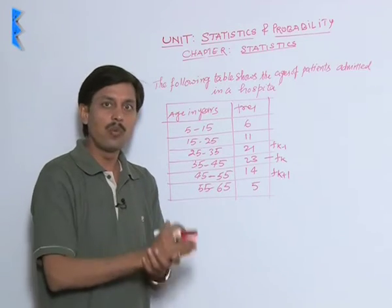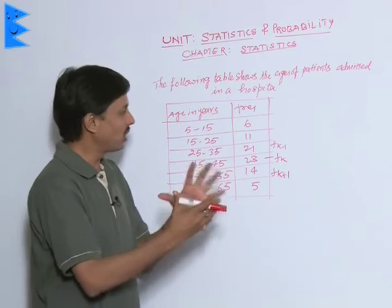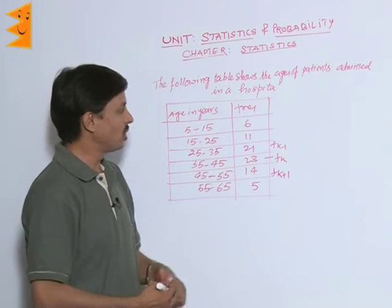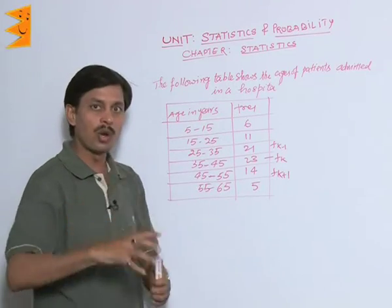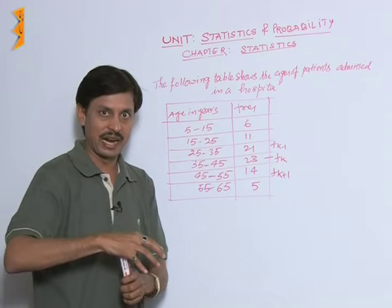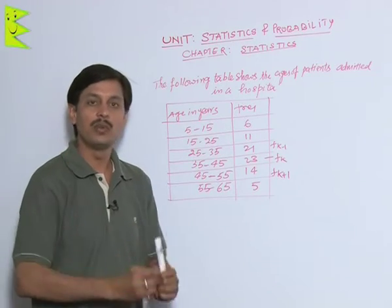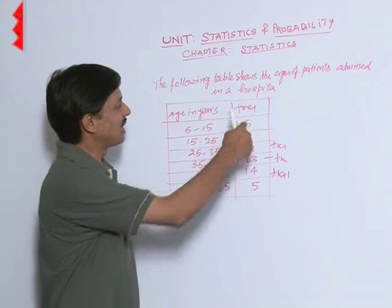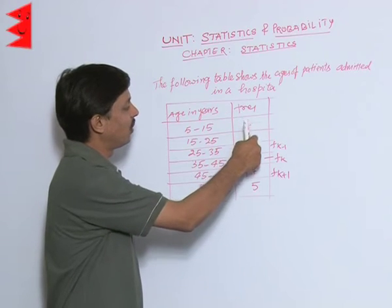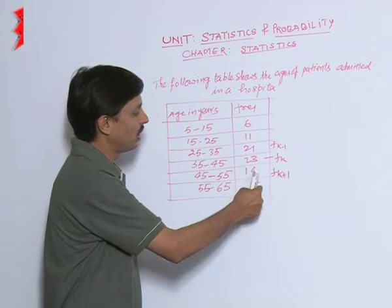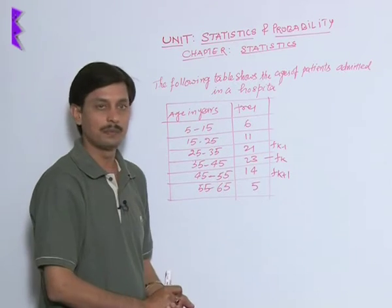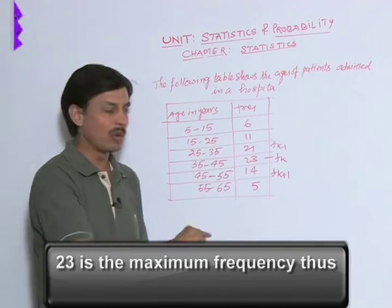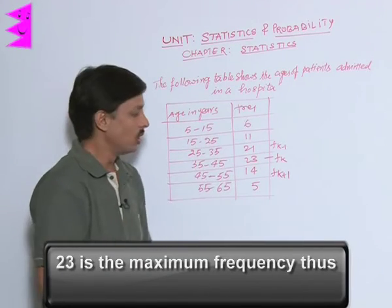In order to find the mode, what is the process? The mode is where the frequency is maximum. Here the frequencies are 6, 11, 21, 23, 14, and 5. So 23 is the maximum frequency as per the given table.